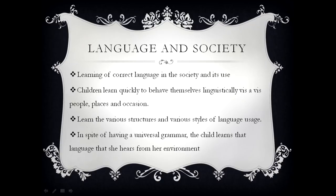How does a person learn or use correct language in society? When we are learning language, we acquire language through universal grammar, something we have already talked about. When we talk about learning correct language in society, we ask how we will use a particular language at a particular place — and this is what we get from our society. Nobody teaches us; it is our inner sense through which we know with whom we are going to talk.